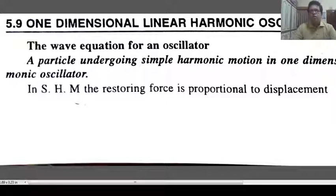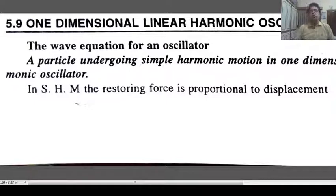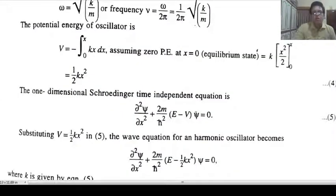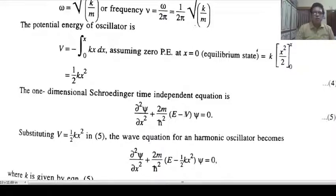We know that a particle undergoing simple harmonic motion in one dimension is known as a simple harmonic oscillator. In simple harmonic motion, the restoring force is proportional to displacement: F = −kx. According to Newton's law, F = m d²x/dt². The equation of motion gives frequency omega = sqrt(k/m). The key quantity we need is the potential energy: V = (1/2)kx². In the one-dimensional Schrödinger equation, we replace V with (1/2)kx².